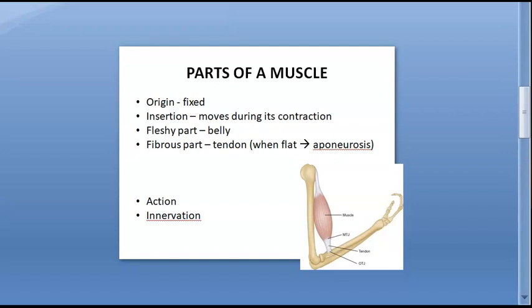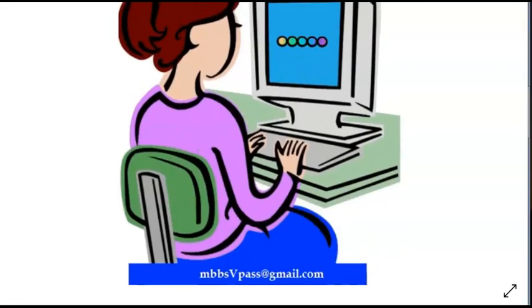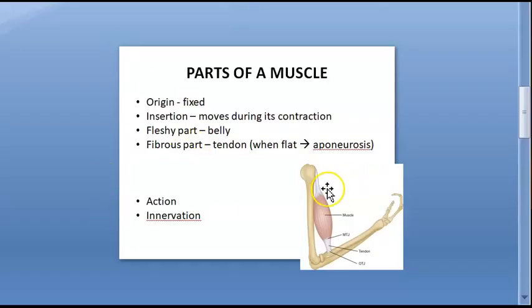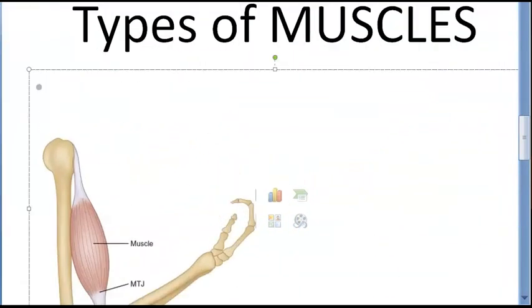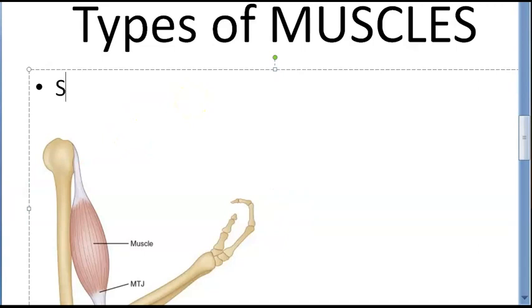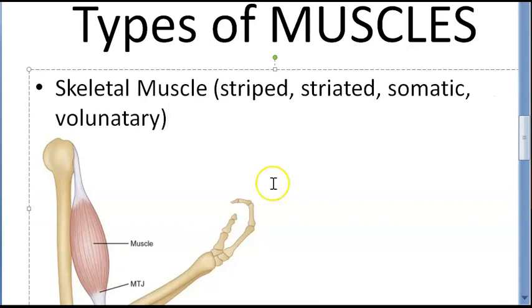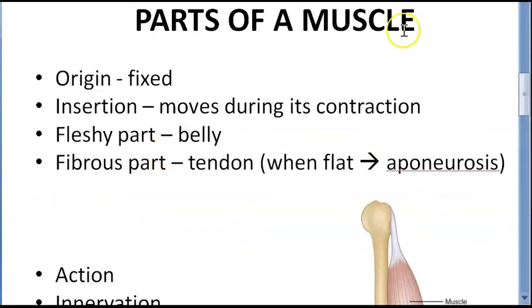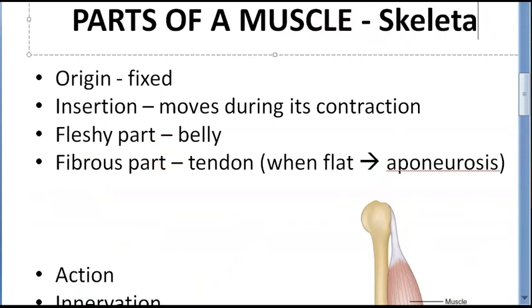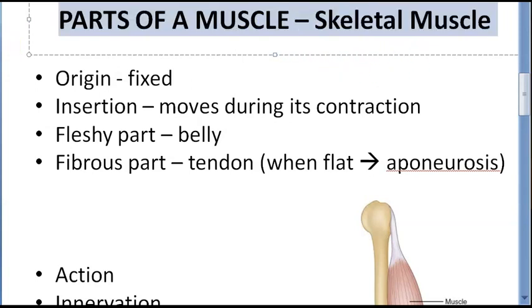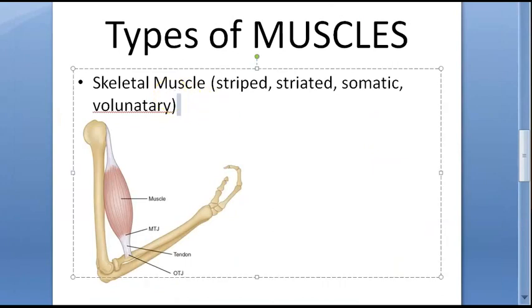To summarize the parts of muscle: we have the tendon, the belly, and the origin and insertion. Now moving on to types of muscles — there are three types. First, skeletal muscle, which is also called striated, striped, somatic, and voluntary. These are synonyms. When we discuss parts of muscle such as belly and tendon, we are specifically talking about skeletal muscle.